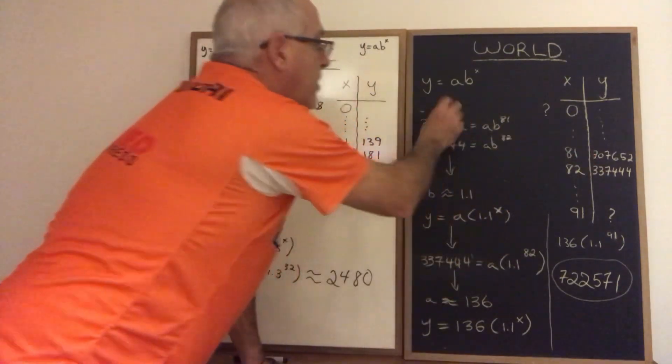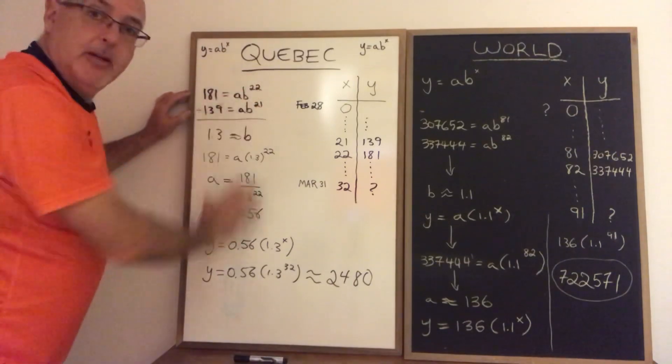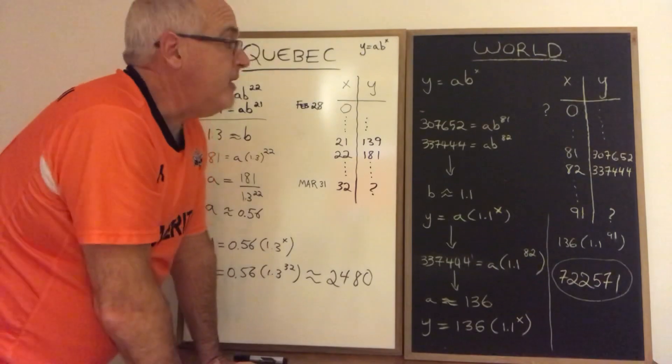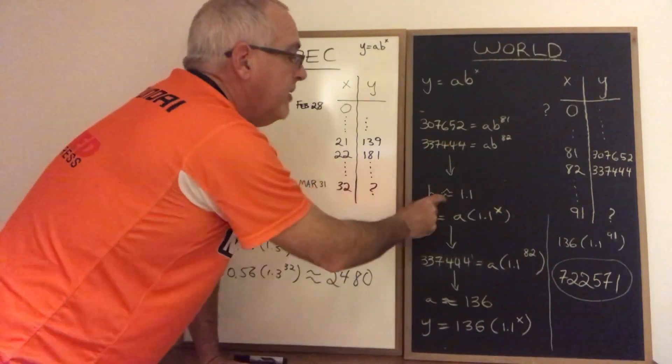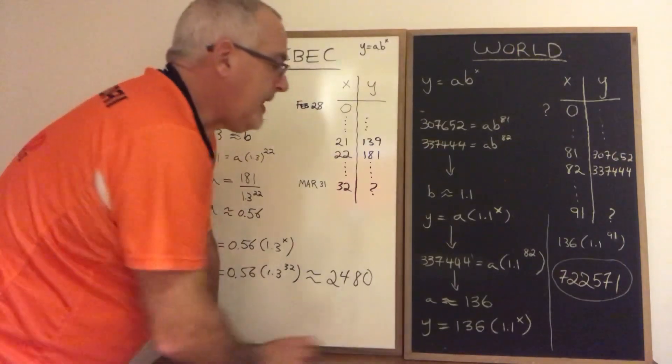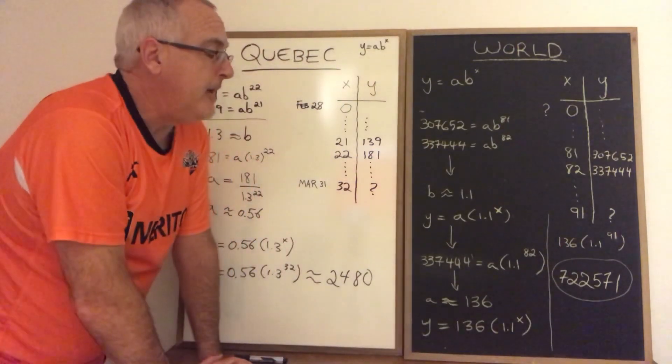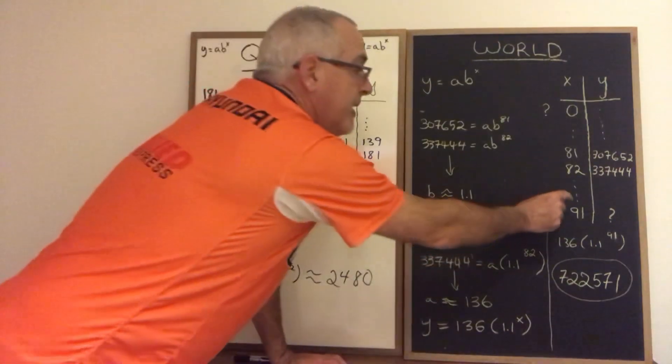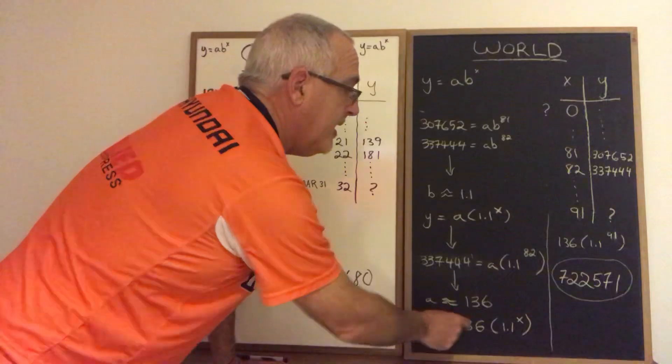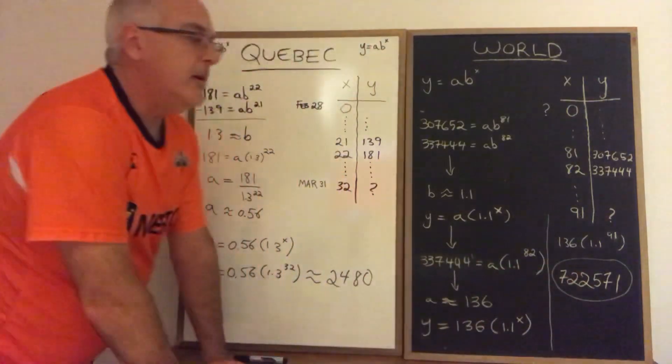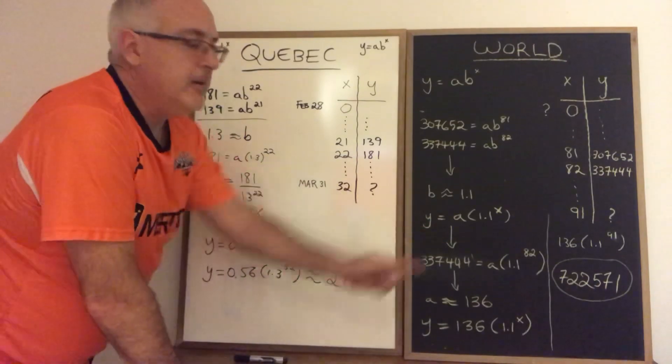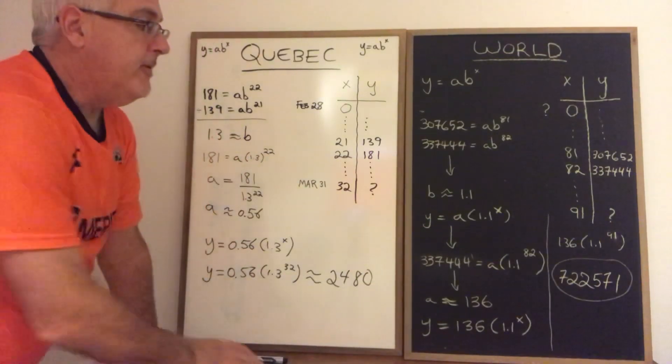When I plug those into my form and do the same manipulations that I'm doing over here but I'm not showing them because the numbers are very large and it won't fit on the blackboard. I ended up with an approximate b value of 1.1 and an approximate a value of 136. When I plug day 91 which again is March 31st into that equation I end up getting a value of 722,571. So this model is predicting that will be the number of confirmed cases by March 31st.